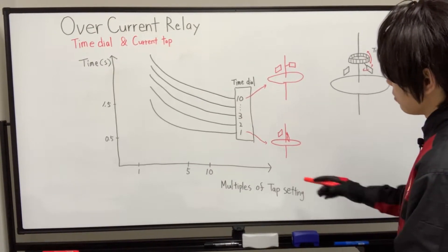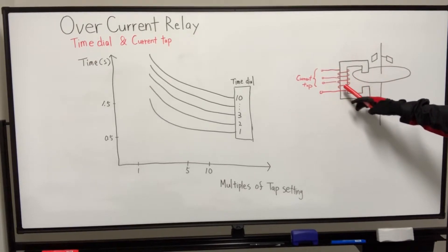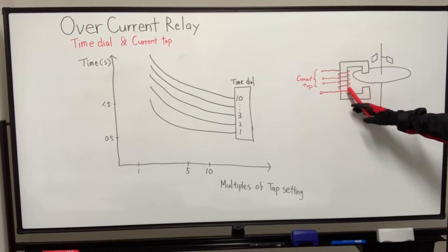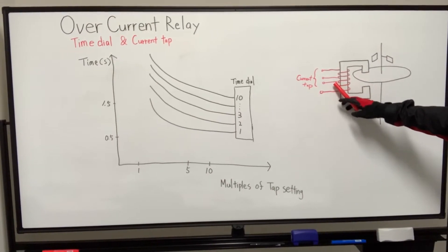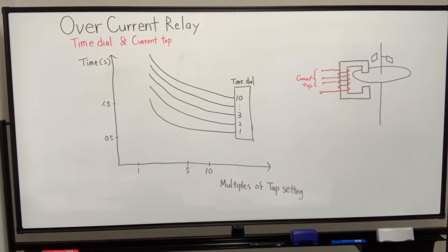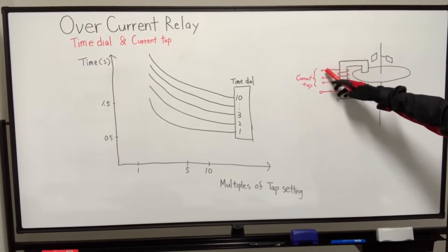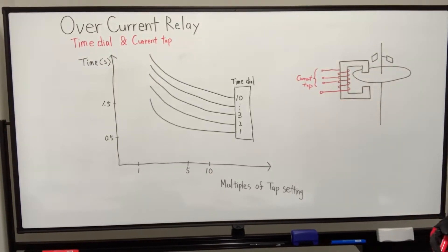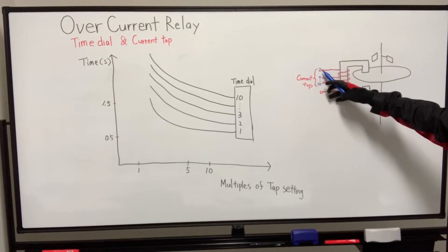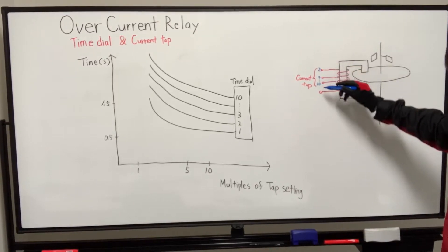This diagram represents the construction of the relay including current tap. The fault current that is fed to the coil is controlled with these current taps, which allow pickup current setting. There are two terminals here - one side is fixed, and another side is connected to each tap. So this is the setting number: tap setting number 2, 4, and so on to 10.